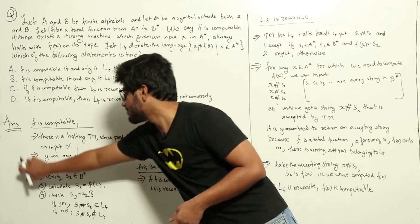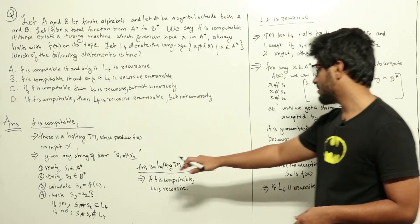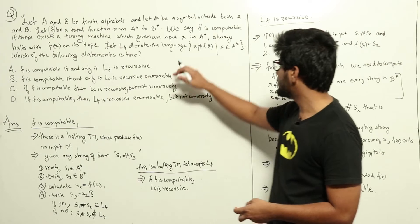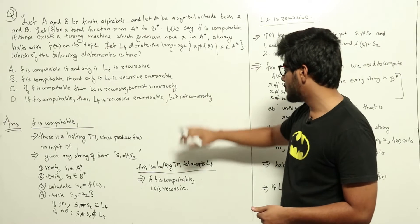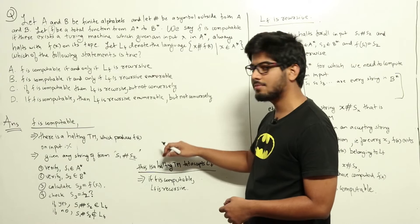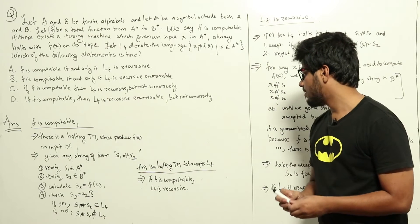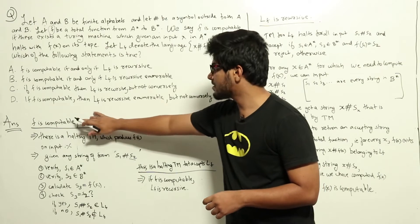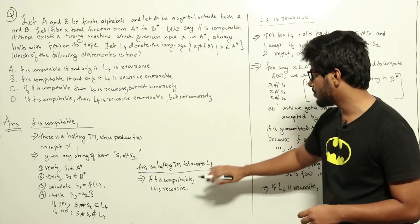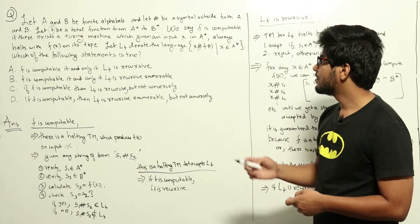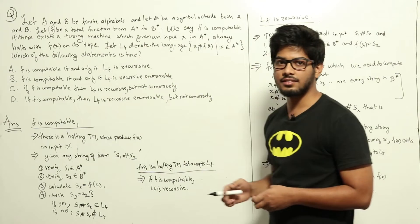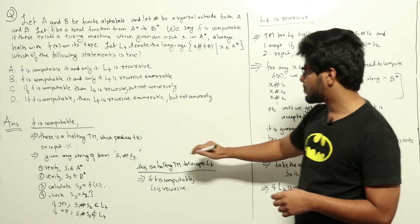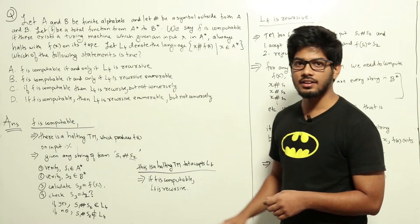This algorithm is nothing but a halting Turing machine that accepts Lf. For any string belonging to Lf, if we input it to this Turing machine, it will halt and accept. If it doesn't belong to Lf, it will halt and reject. So if f is computable, we have a halting Turing machine that decides Lf, meaning Lf is recursive. I have just proved that if f is computable, then Lf is recursive.